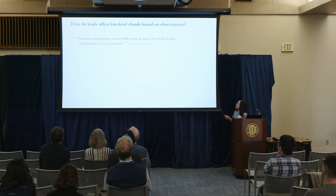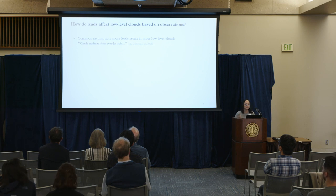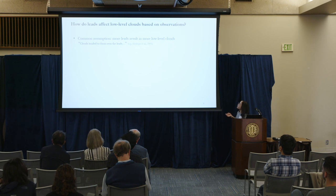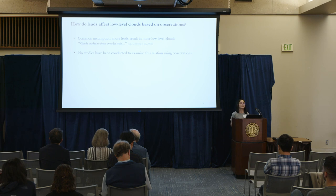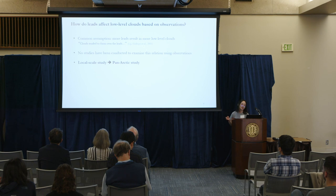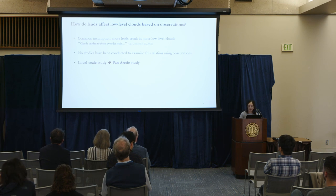A very fundamental and key question we ask in this work is: how do leads impact low-level clouds, and why, if there is any? In terms of the 'how' question, there is a simple but widely assumed, commonly used assumption: more leads result in more low-level clouds. But to the best of our knowledge, no studies have been conducted to examine this relationship, especially from the observational perspective. The initial task of our study is to examine this simple relationship, starting from a local scale study and then extending to a pan-Arctic study. Here I'm only going to show the local scale study in the interest of time.